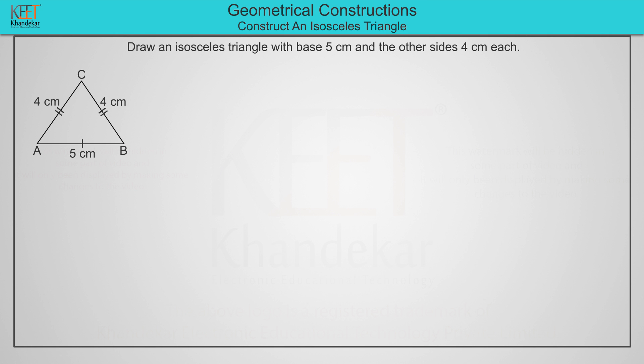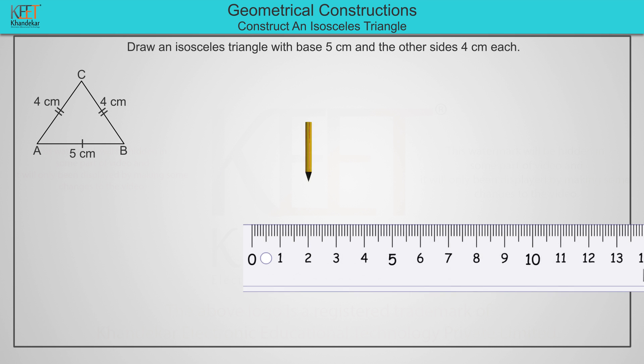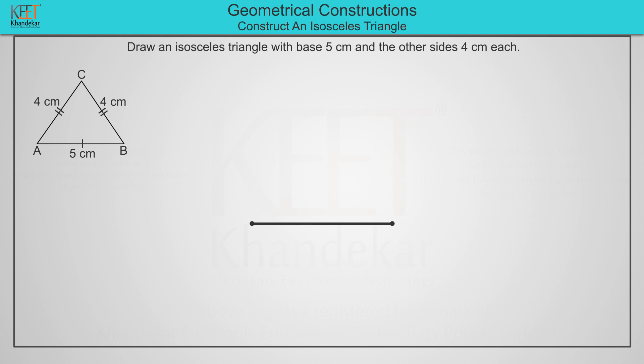The length of the sides are shown in the figure. Now to construct triangle ABC, draw a line segment that is the base of 5 cm. Name the endpoints as point A and point B.